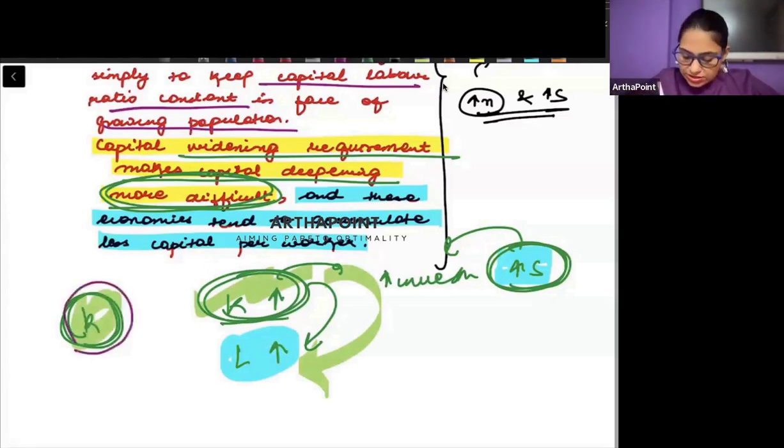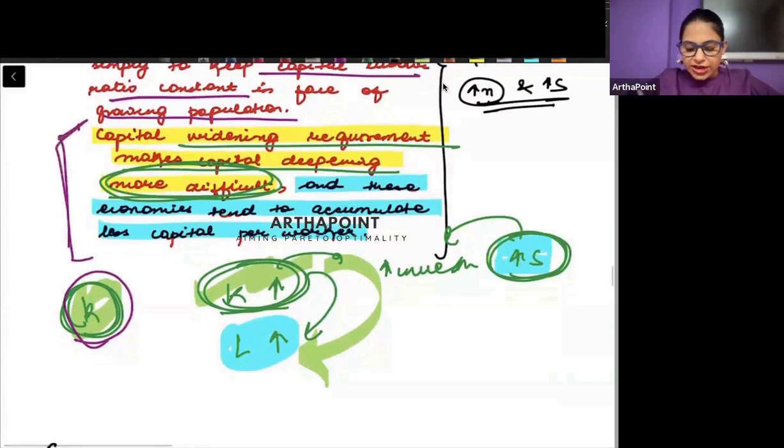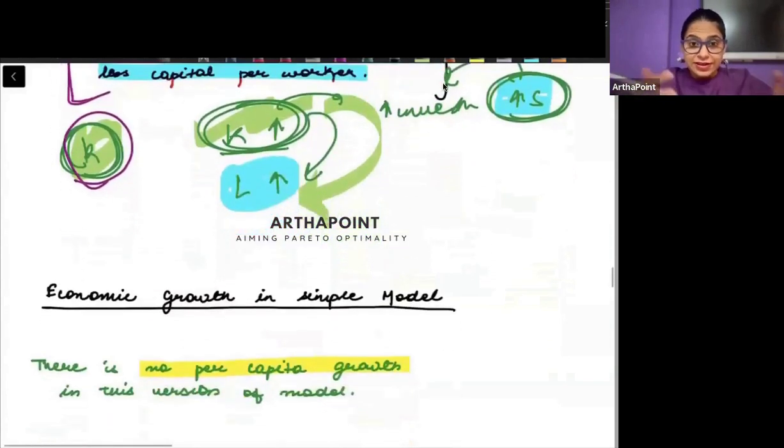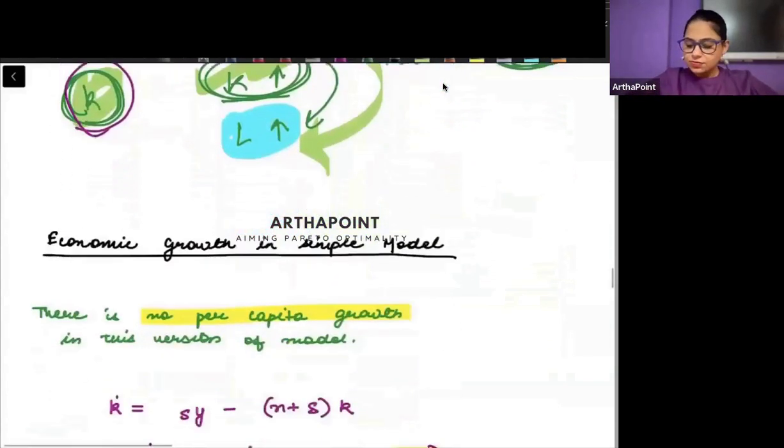I am not able to increase small k, and that is stopping growth in my economy. It's very important to understand the difference between deepening and widening.